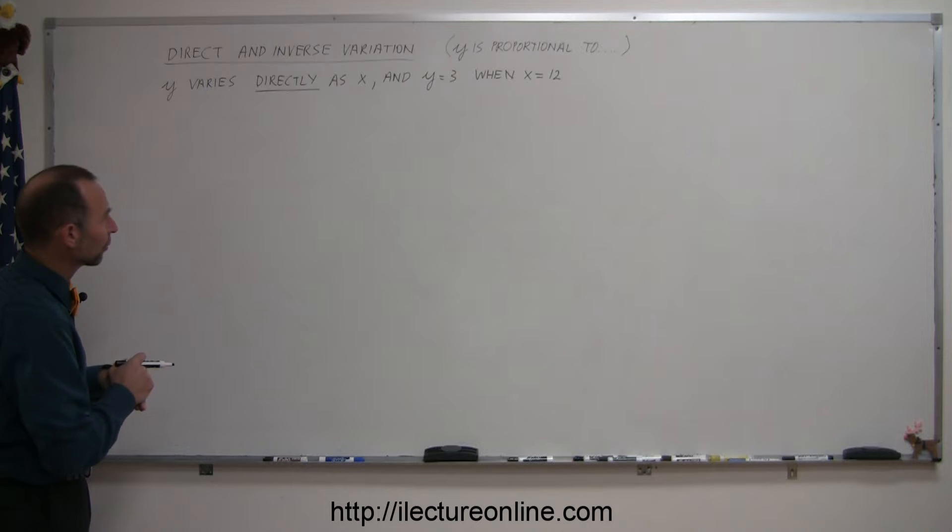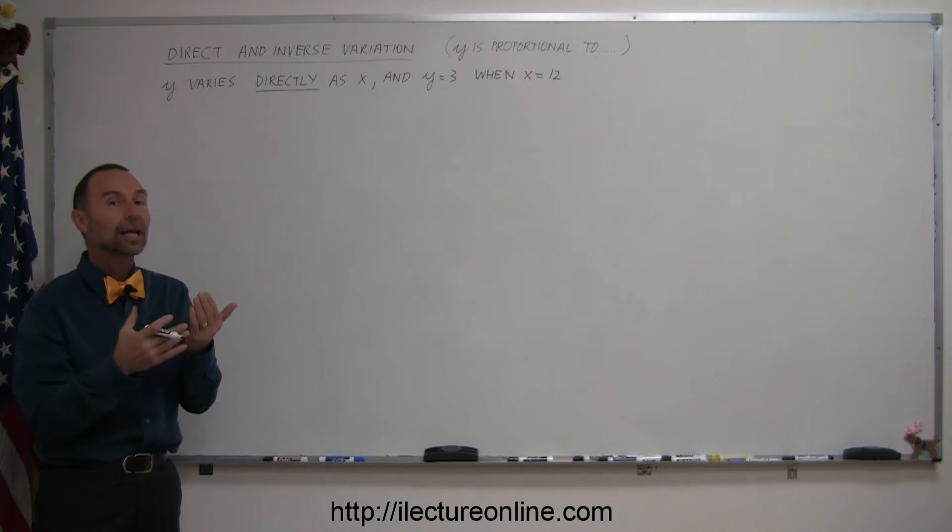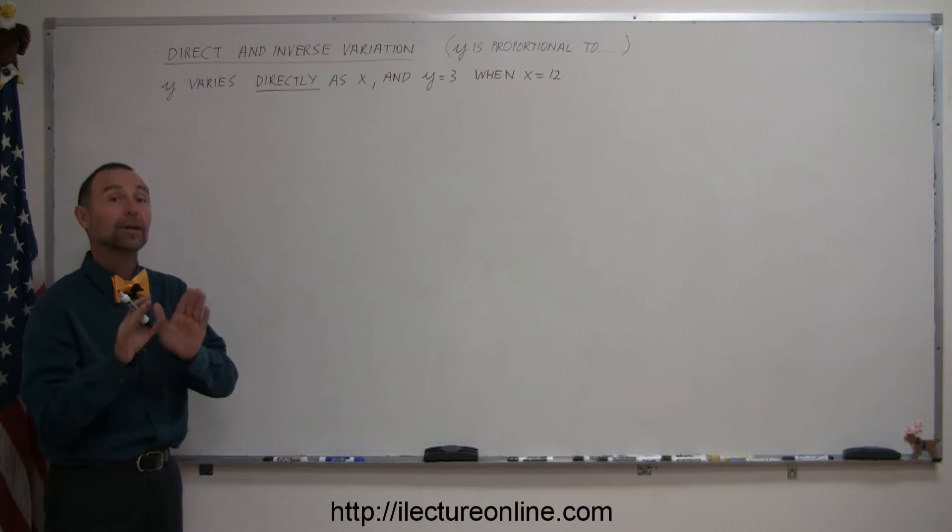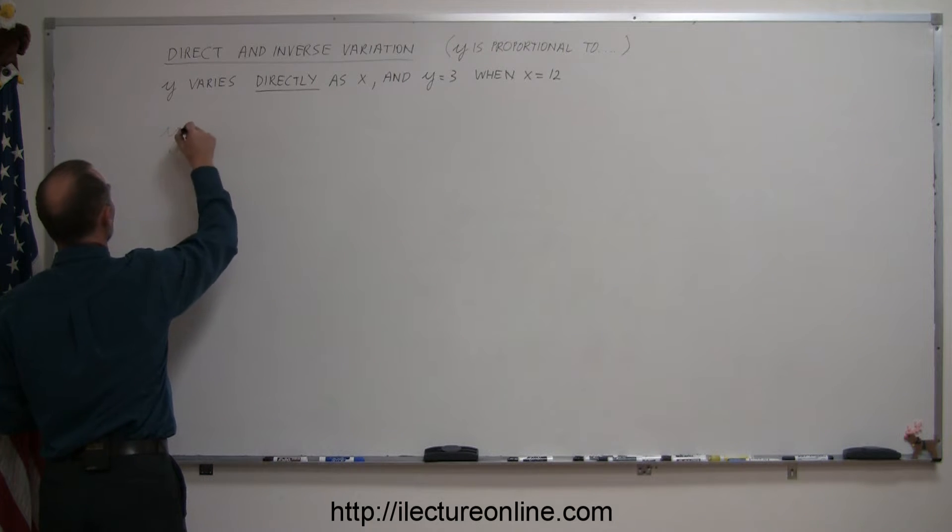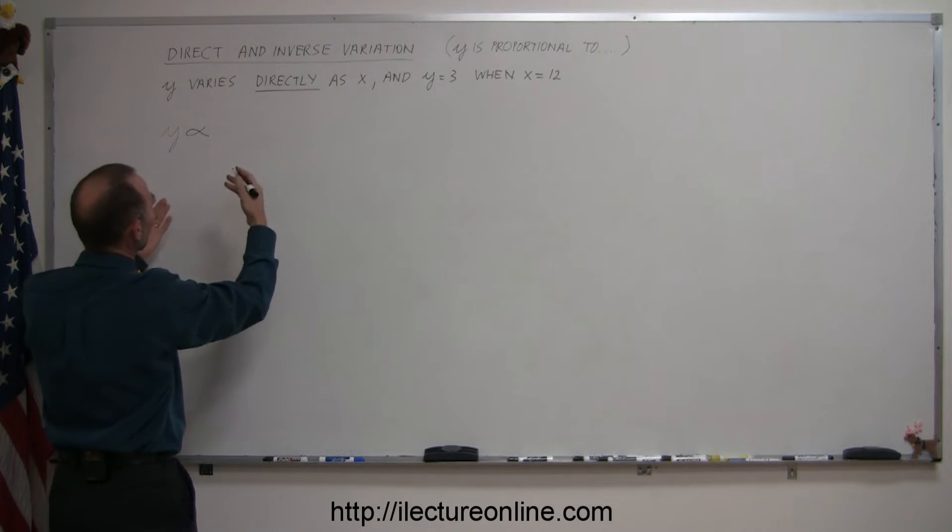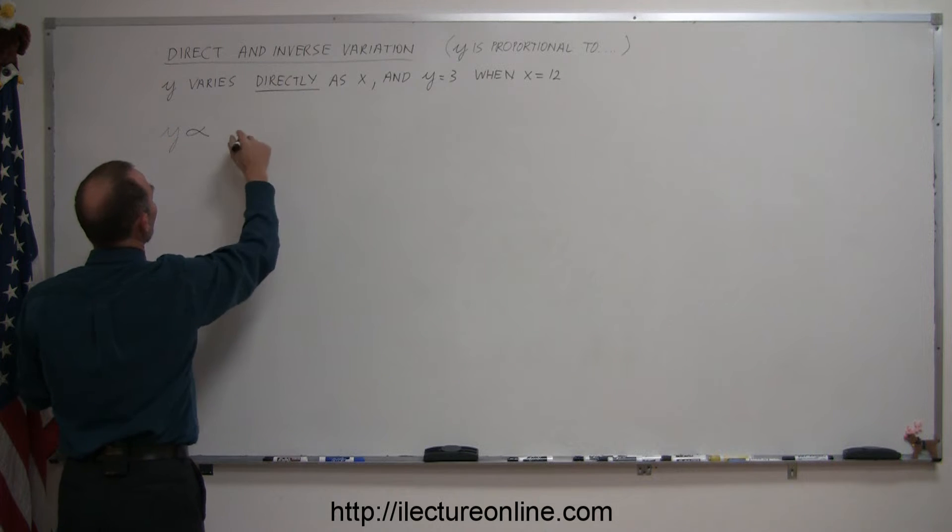So how do you do these problems? Well it turns out that you have to turn a proportionality into an equation. So let me explain how that works. So here we can say that y is proportional to, so that symbol can indicate varies directly or indirectly to or is proportional to, in this case x.